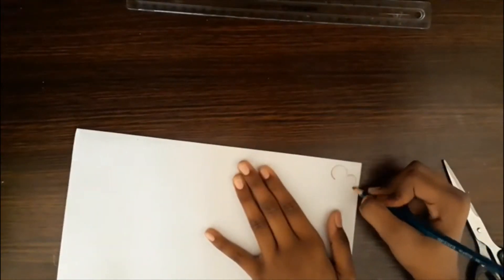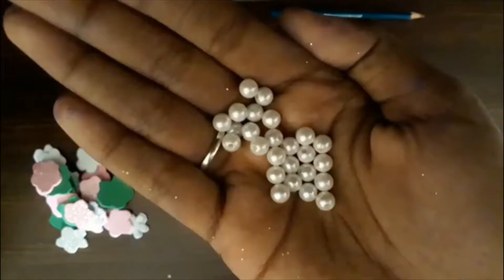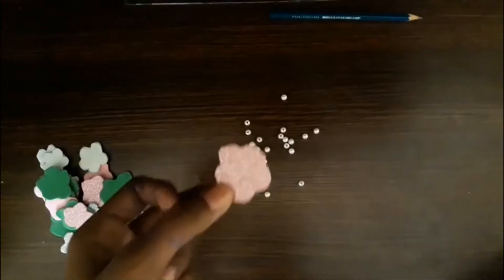Now take glitter paper and cut flowers out of them. Take the beads and stick it on the middle of the flowers.